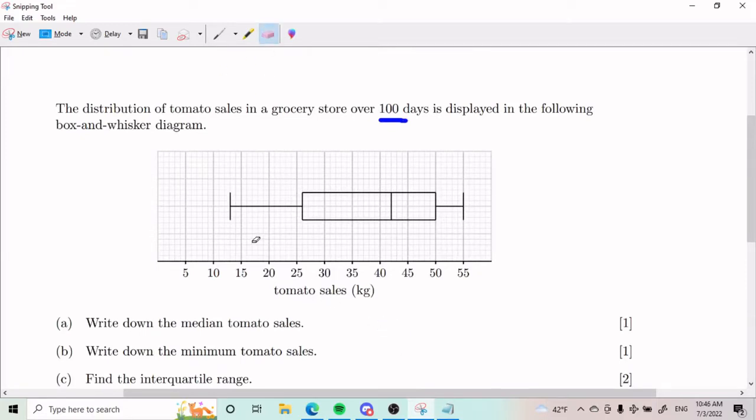Part A asks us to write down the median tomato sales. Before I jump into that, it's important to understand how you can read a box and whisker plot. What I'm about to do is a general rule for every single box and whisker plot. Intuitively, this line in the middle is going to be your Q2. Q2 is going to equal your median.